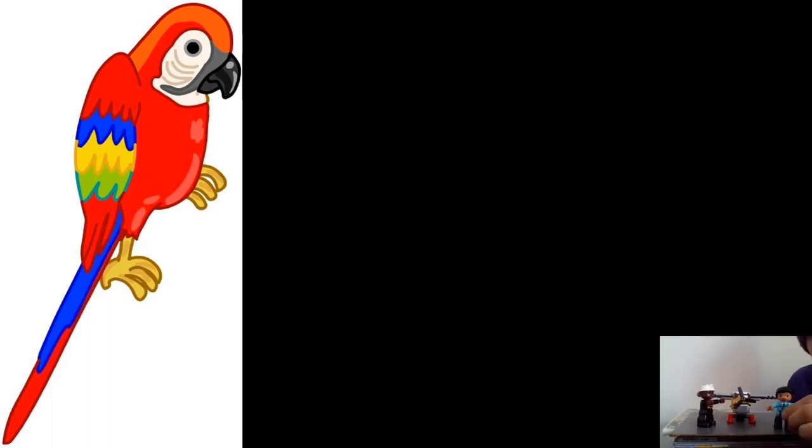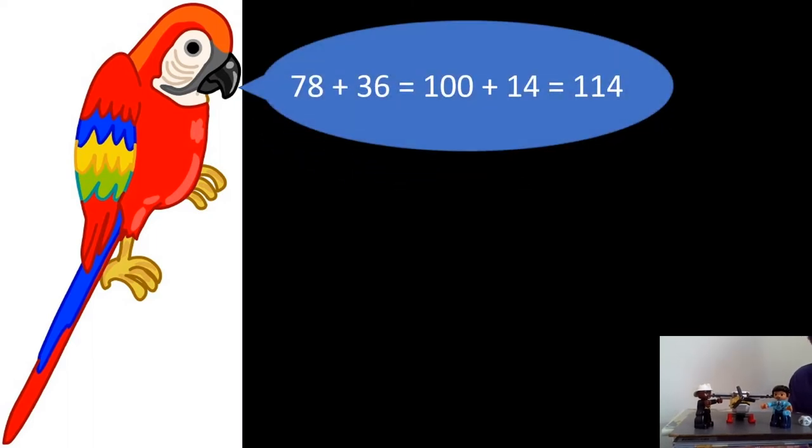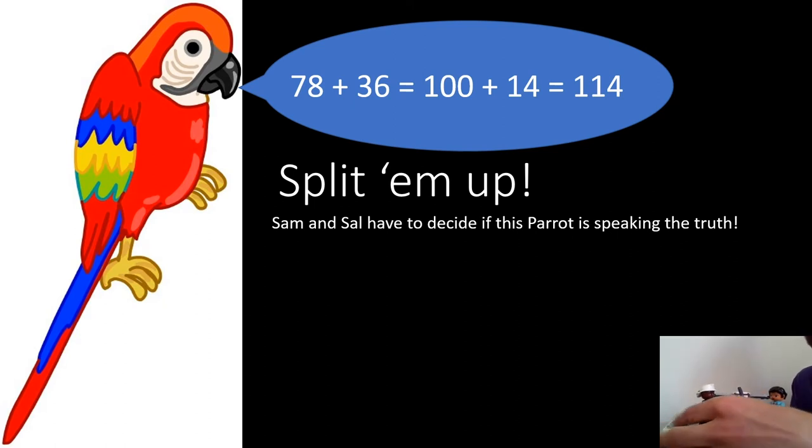Oh, my gosh. Hey, Sal. Is that a parrot? I think it is, Sam. Parrots don't live in marshes. I thought they were more like rainforest animals. Hey, don't question these things, Sal. Wait. Squawk. 78 plus 36 equals 100 plus 14 equals 114. Squawk. 78 plus 36 equals 100 plus 14 equals 114. You hear that, Sam? I did. Sal, what is that parrot saying? He said something like 78 plus 36 is equal to 100 plus 14, which is equal to 114. Does that make any sense to you, Sam?